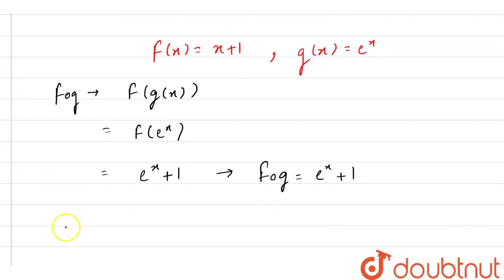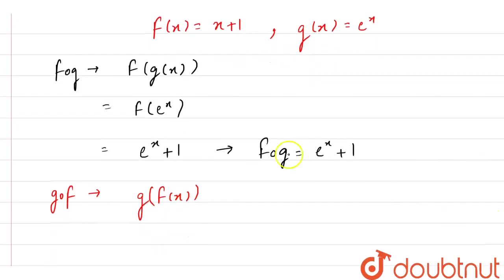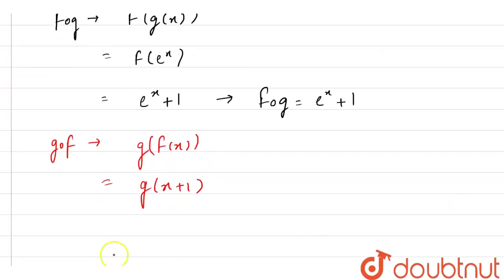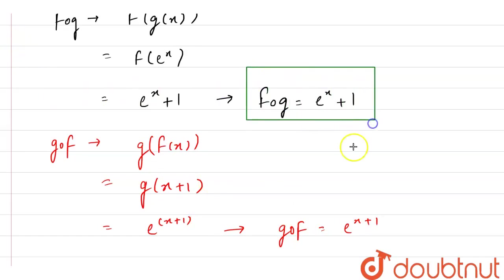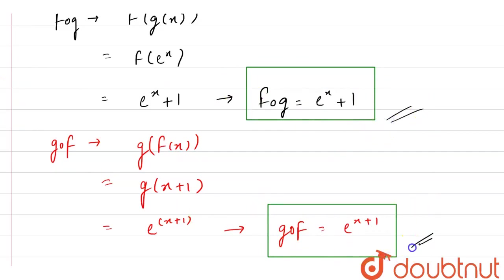Now let's also find GOF. We can write GOF as G of F(x). Since F(x) is equal to x plus 1, we can write this as G of x plus 1. Since when we have x, G(x) is e raised to power x, we can say that GOF is equal to e raised to power x plus 1. Hence, our final answer is: FOG is equal to e raised to power x plus 1 and GOF is equal to e raised to power x plus 1. Thank you.